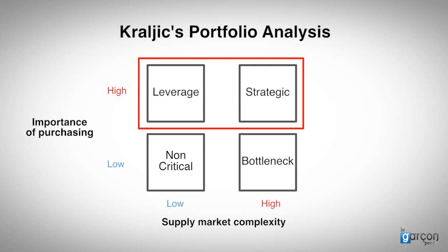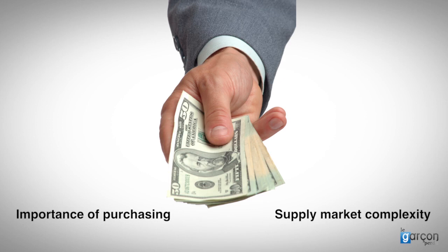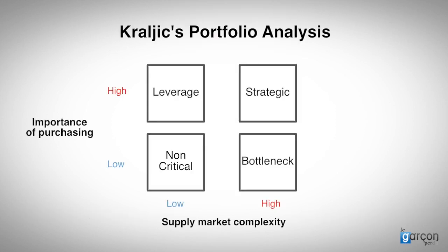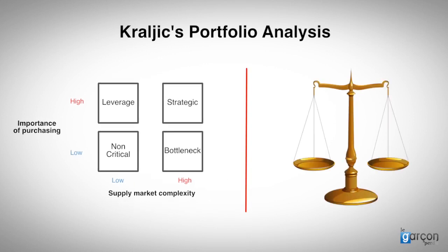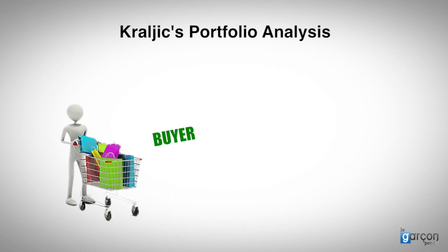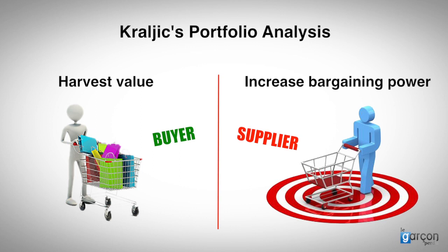First, a reminder of the basic model. The spend portfolio is dimensioned by two variables: the importance of purchasing and the complexity of the supply market. Specific strategies are developed for the categories in each quadrant, based on an understanding of the balance of power between the buyer and the supply market. Where the buyer has market power, strategies are designed to harvest value for the buyer. When the supplier has market power, strategies are designed to change the market dynamics and increase the buyer's bargaining power.